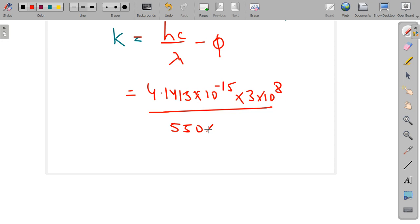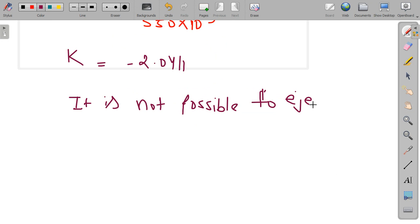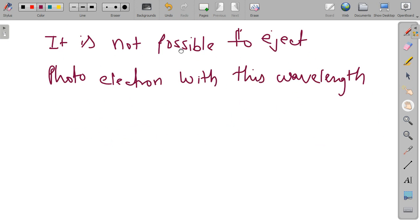we get the value of maximum possible kinetic energy, that is k equals minus 2.0411. As we see, it is negative. Hence, with the given wavelength, it is not possible to eject photoelectrons. As k is negative.